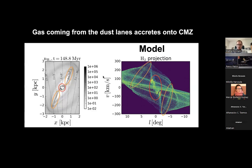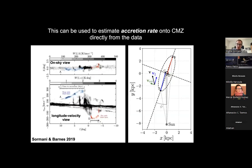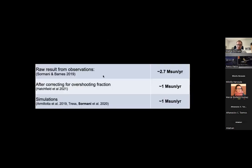For bar-driven inflow: in the model you can see the bar lanes and a vertical ridge connecting the bar lane to the CMZ — this is essentially the ongoing accretion. In 2019 we used this to estimate the accretion rate onto the CMZ directly from the data, modeling the bar lanes geometrically as two rivers accreting into the center. The raw result was about 2.7 solar masses per year. Corrected with Perry Hatchfield to account for gas overshooting, this was lowered to approximately one solar mass per year, which agrees reasonably with simulations.